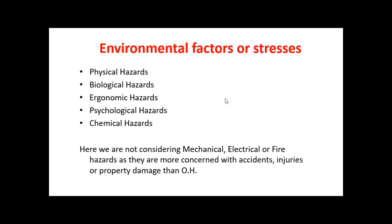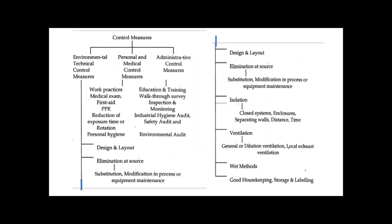These are the main environmental factors or stresses controlled under the industrial hygiene concept. Under the controlling methods for different environmental factors or stresses, the main control measures are environmental technical control measures. Under these, there are different points like design and layout, then elimination at source — meaning removal of that particular stress from the source itself — with methods like substitution, modification in process, or equipment maintenance.